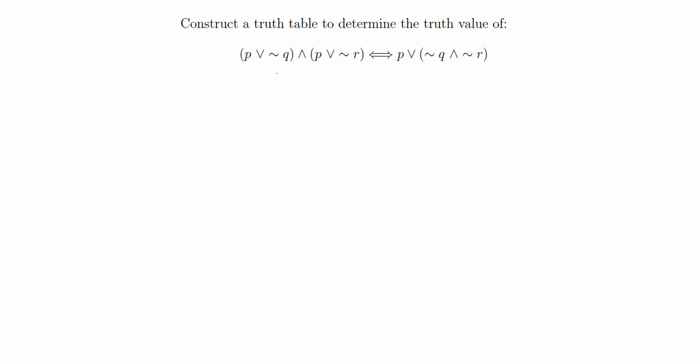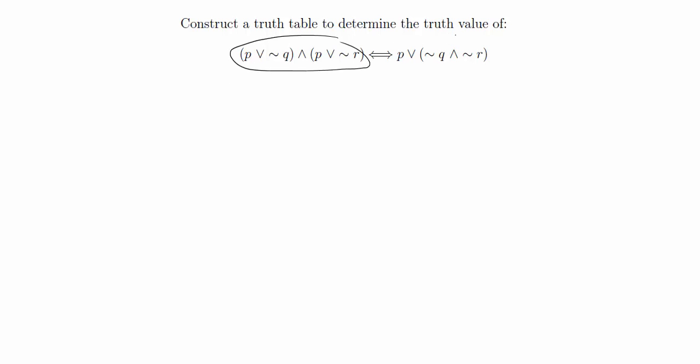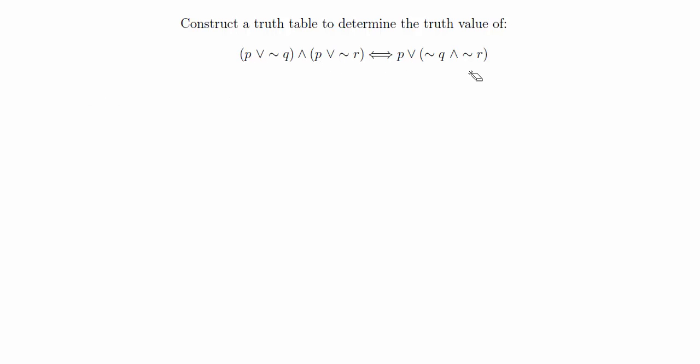In this video, we're going to use truth tables to solve some logic problems. In this problem, we're trying to see if this left-hand side is logically equivalent to the right-hand side, and we can do that using a truth table. If this has the same truth values for all propositions as this one, then they are logically equivalent; if not, then this statement is false.